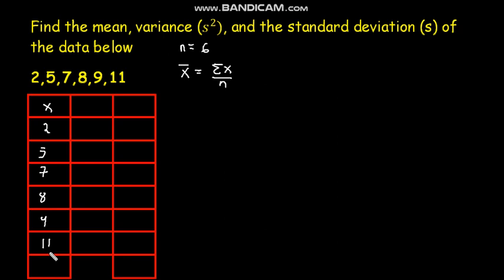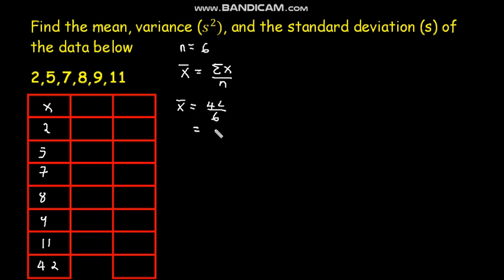The summation of the samples is 42. Therefore we conclude that our sample mean is given by 42 divided by 6, and that is 7. Now we want to calculate the sample variance.